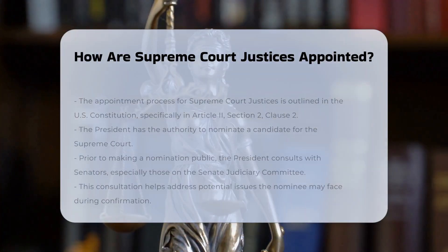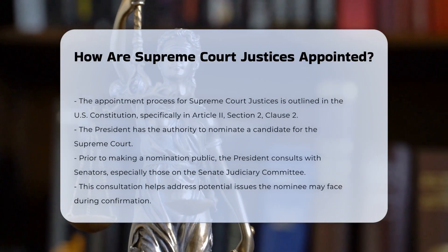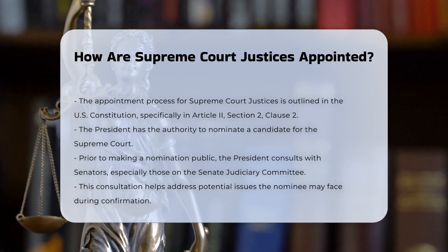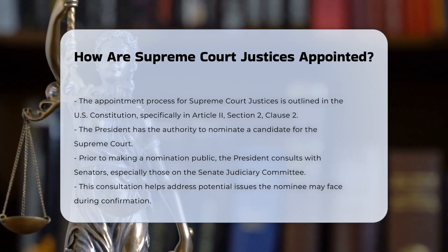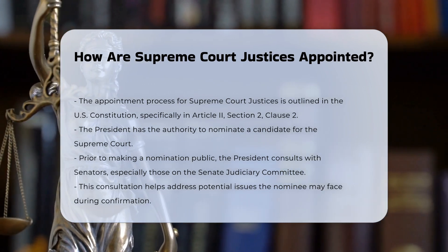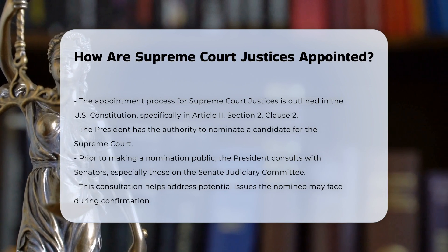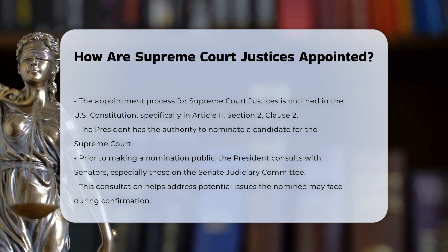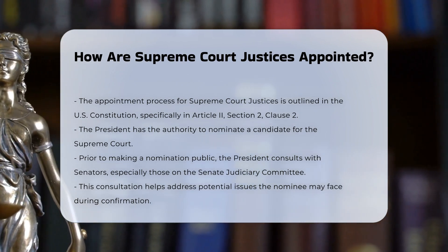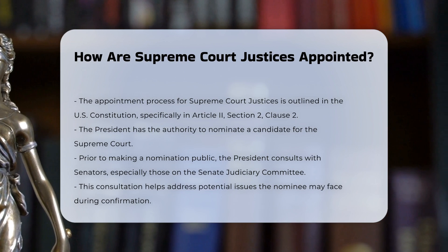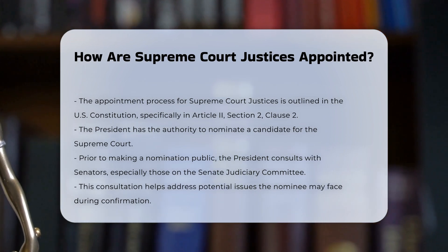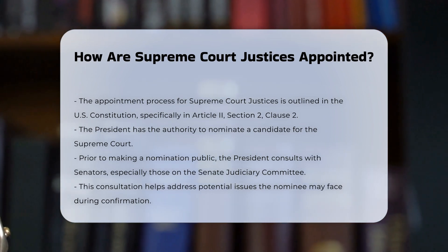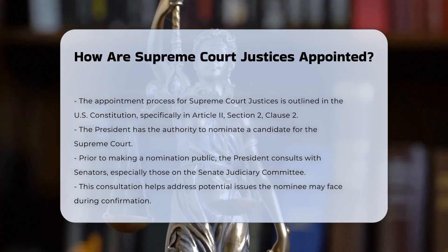The process of appointing a Supreme Court Justice is outlined in the United States Constitution, specifically in Article 2, Section 2, Clause 2, known as the Appointments Clause. This clause states that the President shall nominate and by and with the advice and consent of the Senate shall appoint judges of the Supreme Court.